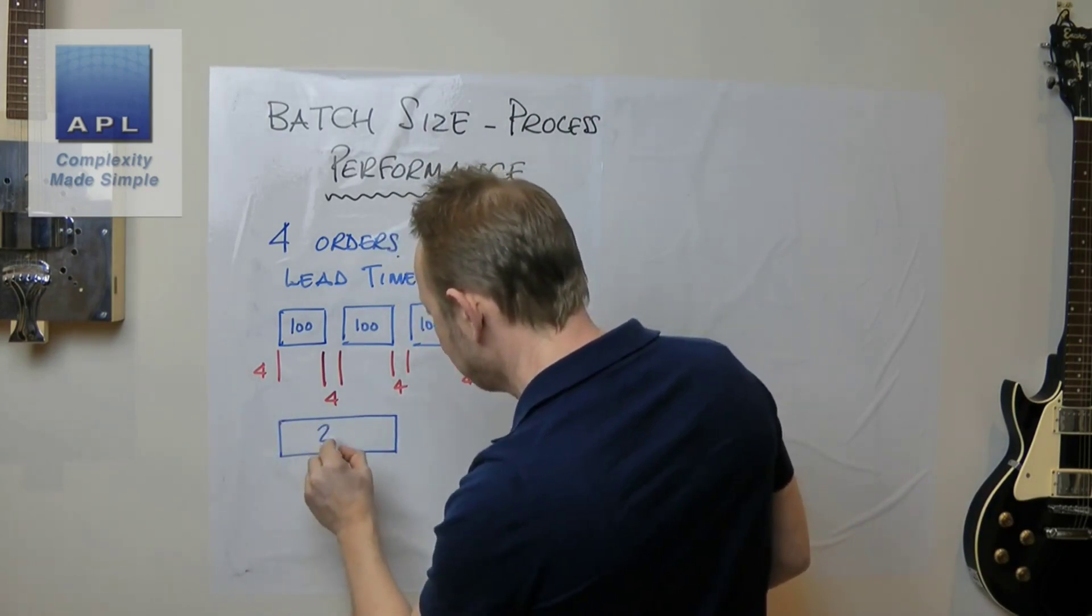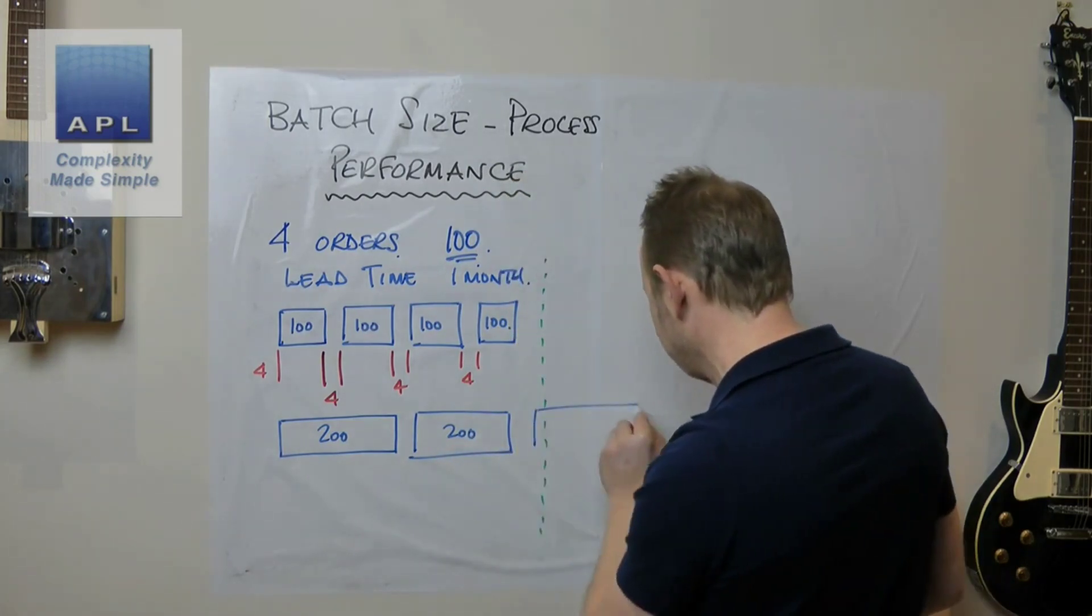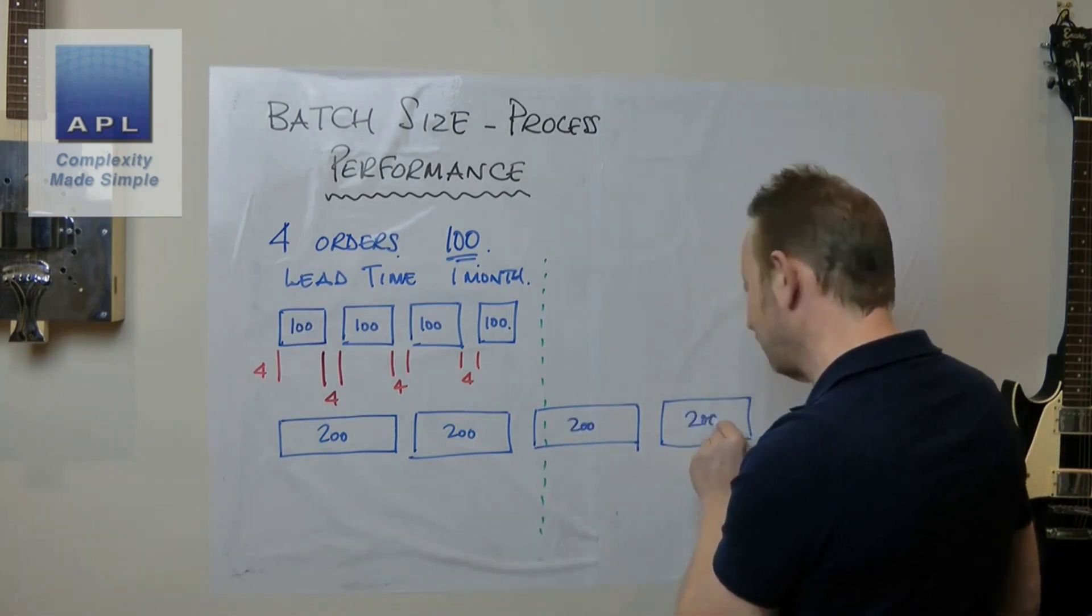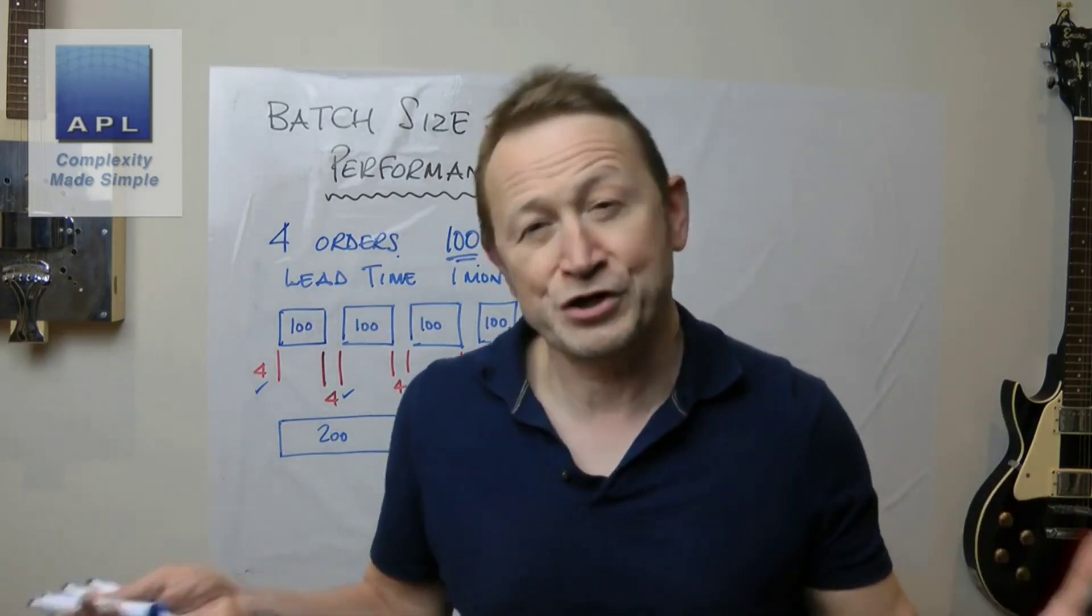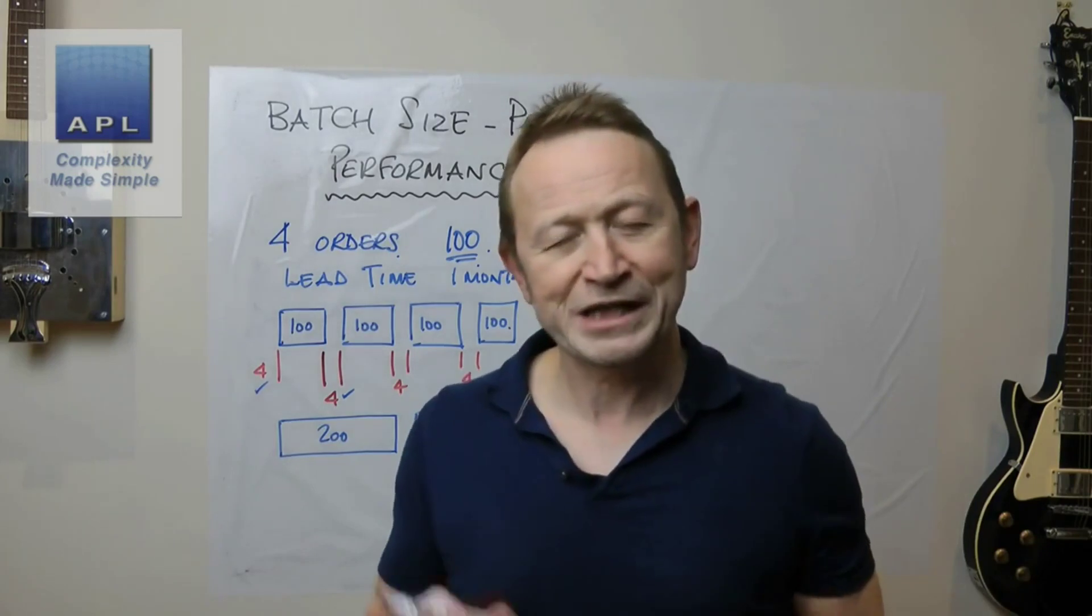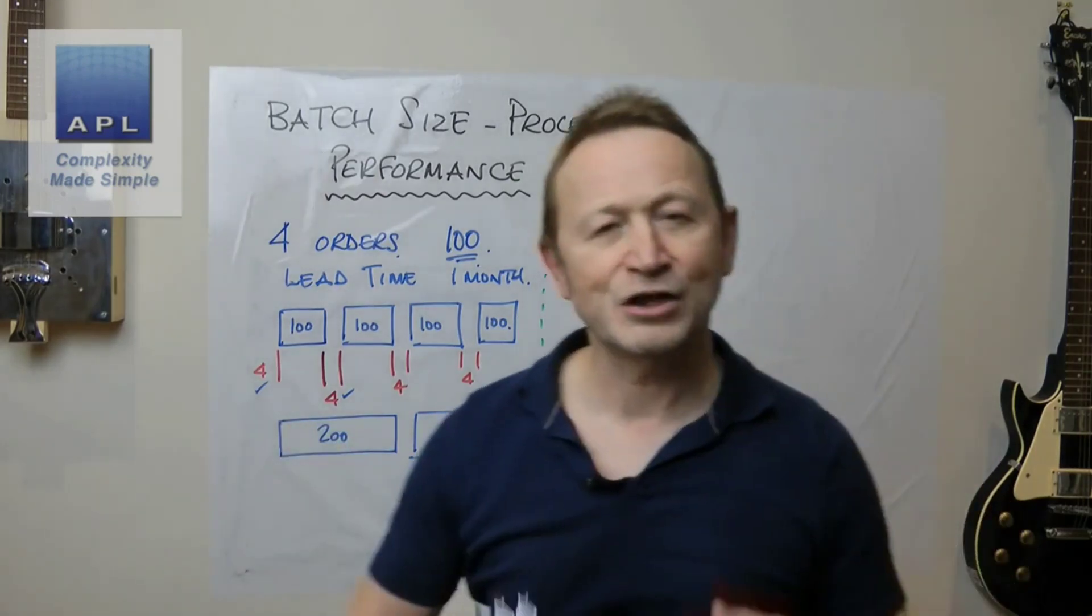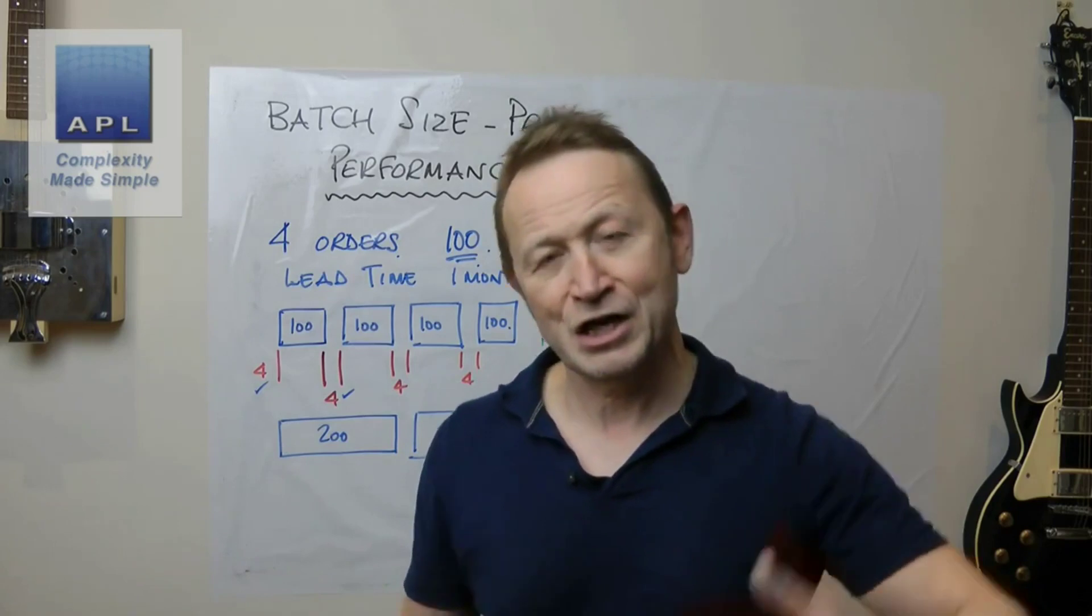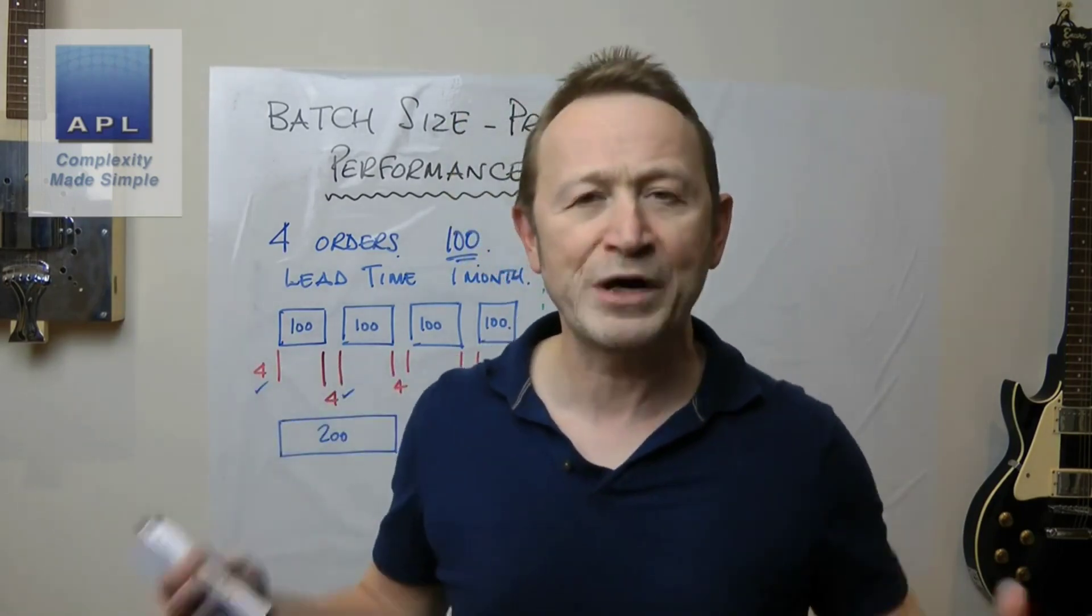You could easily save some setup time here by doubling the batch sizes up to 200. You immediately halve the number of setups, so we immediately gain ourselves eight hours worth of productive time potentially. But look what we've just done—we've just upset two customers. We cannot now meet the lead time because by doubling the batch size you immediately run out of capacity. Then people start saying we haven't got good on-time-in-full, so your on-time-in-full starts to travel downwards even though your productivity is going upwards.